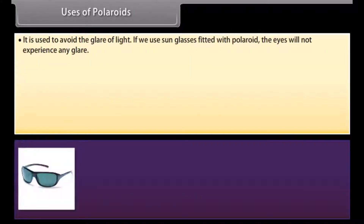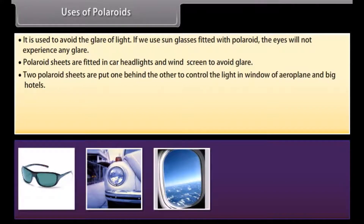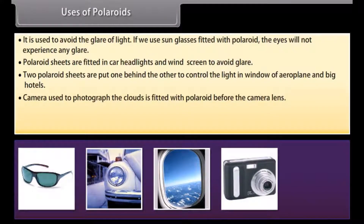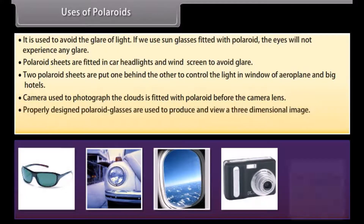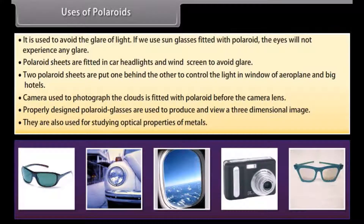Some important uses of polaroids: they are used to avoid glare of light — sunglasses fitted with polaroid prevent eye glare. Polaroid sheets are fitted in car headlights and windscreens to avoid glare. Two polaroid sheets placed one behind the other control light in windows of aeroplanes and big hotels. Cameras used to photograph clouds are fitted with a polaroid before the lens. Properly designed polaroid glasses are used to produce and view three-dimensional images, and they are also used for studying optical properties of metals.